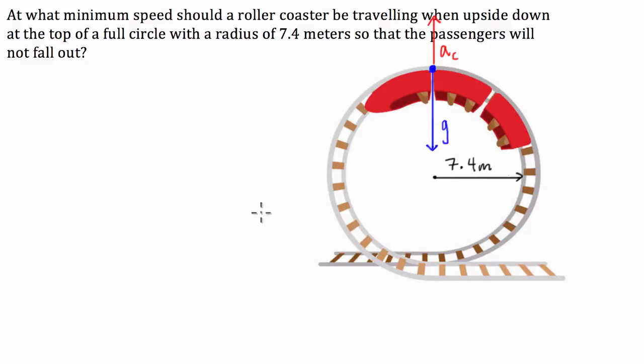So, if I was in an exam, what I would do now is I'd make a little bit of a statement, just so the teacher knows that I know what I'm talking about. I would say that the minimum velocity is when the acceleration due to the circular motion is equal to g.